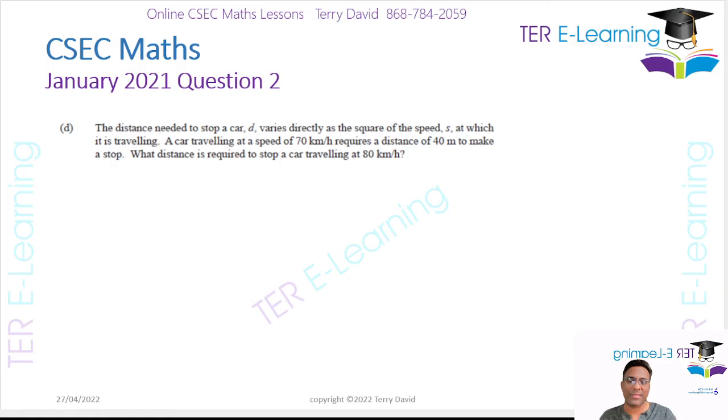And now we have the last part of this question here. The distance needed to stop a car varies. So d varies directly as the square of the speed. Now, you guys need to be able to translate these words into an equation. So if d varies directly as the square of the speed, that means that d is proportional to s².